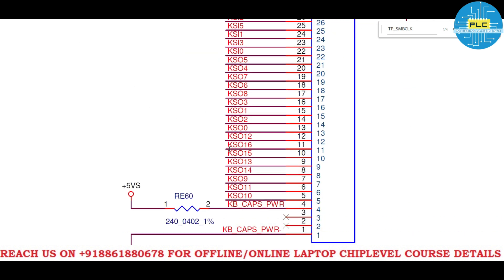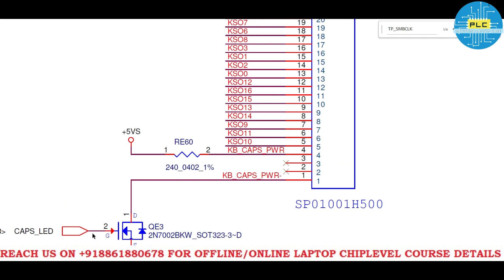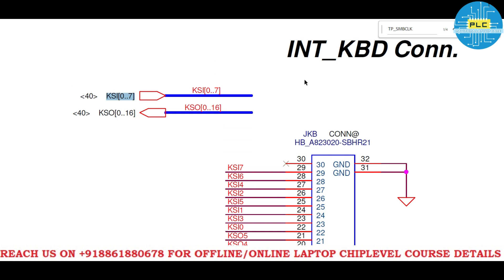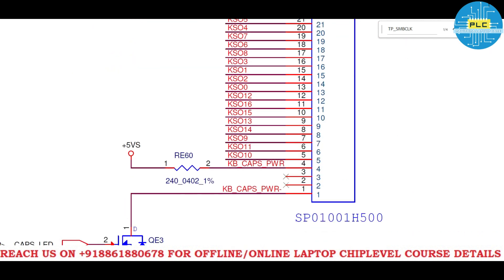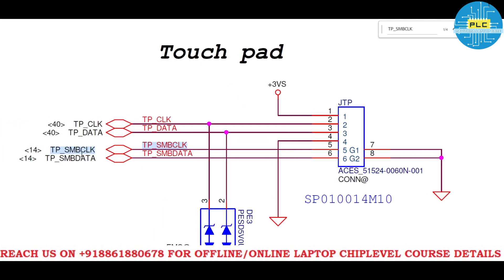Key points to note: five-volt suspend voltage and the MOSFET — you have to take care of these. The caps LED signal comes through the IO, then your caps lock will be on. Sometimes the touchpad may have more pins — maybe 10 or 12 — but they are almost similar. The important thing is that it's bidirectionally connected to the IO and bidirectionally connected to the PCH. If you have any doubts, put them in the comment box, and please subscribe to our channel. Thank you.